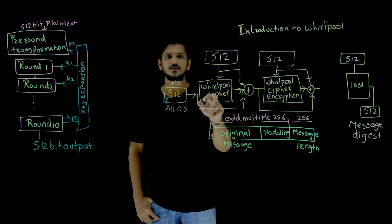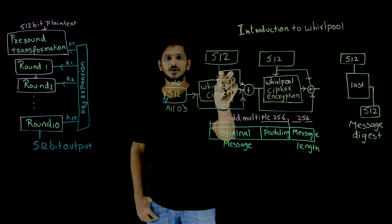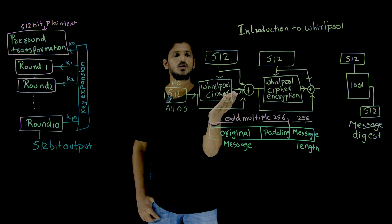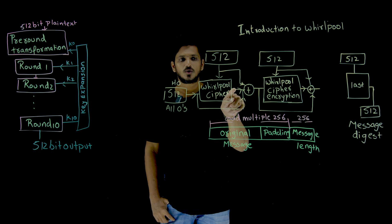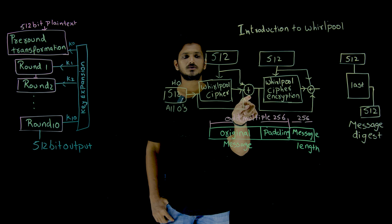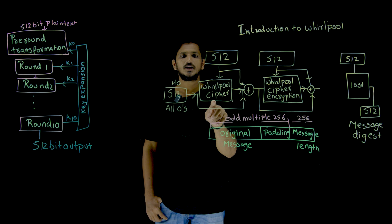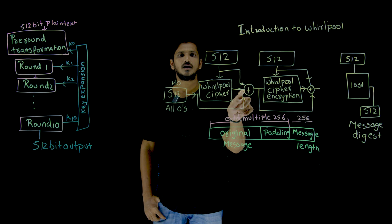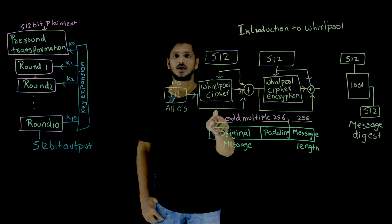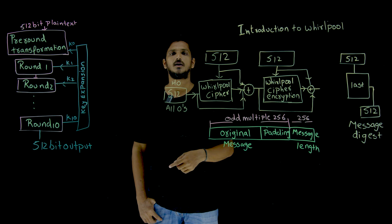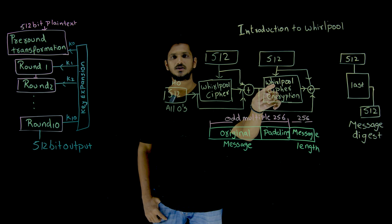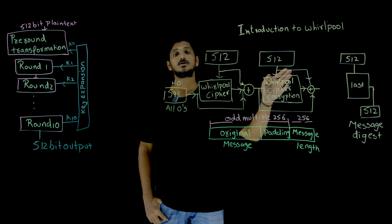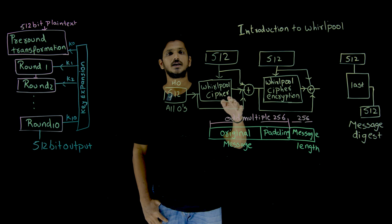So the Whirlpool ciphertext encryption takes a 512-bit input along with a 512-bit key and generates a 512-bit output. That output is then XORed with the plain text and also XORed with the key. The result of that XOR operation with the plain text and key is used as the key for the next round. The next 512-bit plain text block is then taken as input and the process continues — that's why it is called the iterative method.